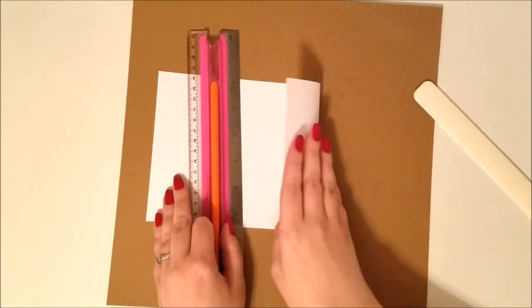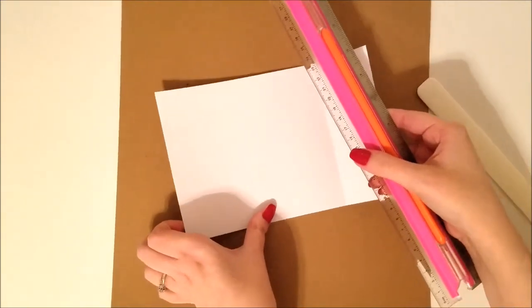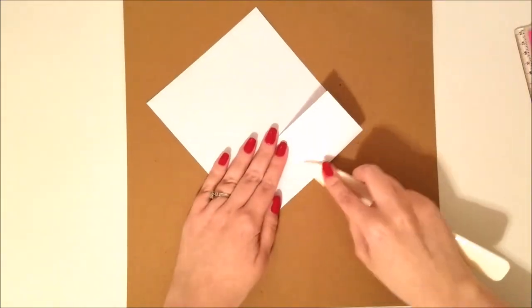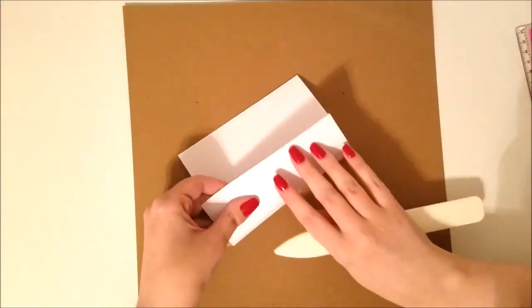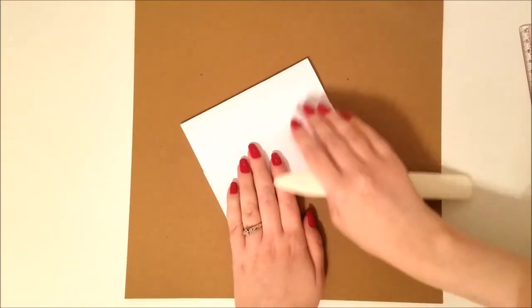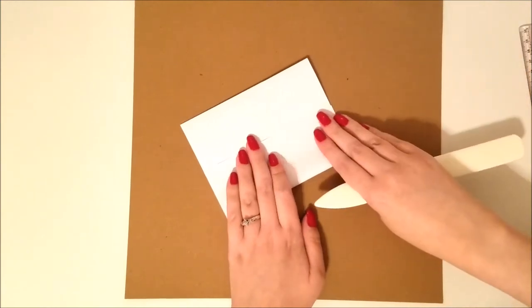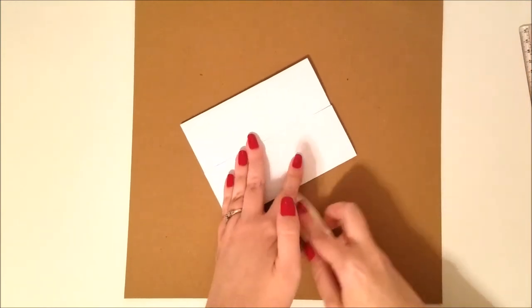And then just place your ruler right on your score line and just fold that up and over and that'll give you a really nice tight crisp crease. So I'm going to go ahead and take my bone folder and crease that down. And at this point you can make any little minor adjustments you need to make to your fold.